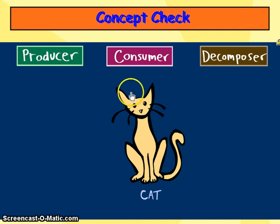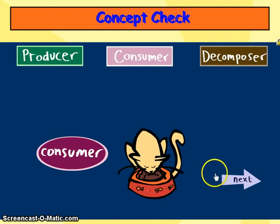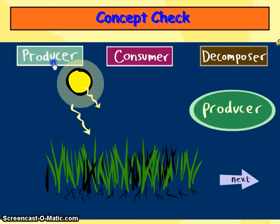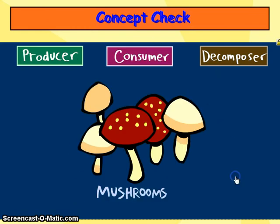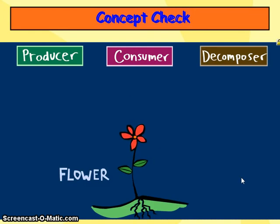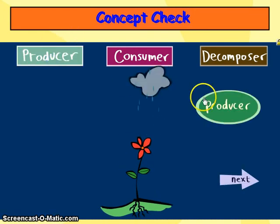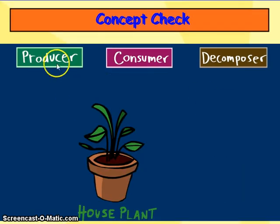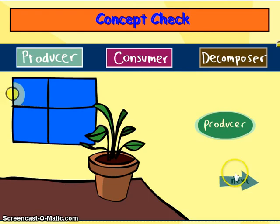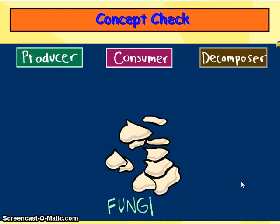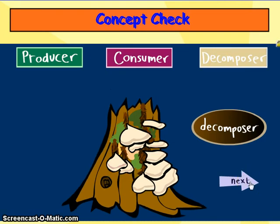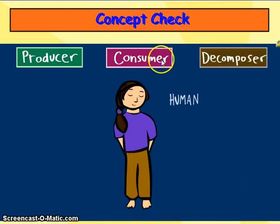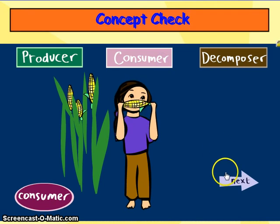Now let's look at examples of producers, consumers, and decomposers. What would a cat be? It is a consumer. What is a houseplant? What about fungi? And a human? You get the idea.